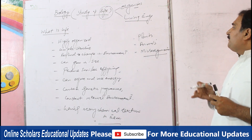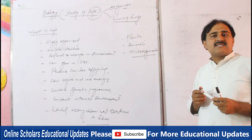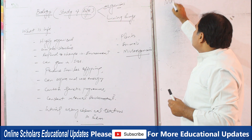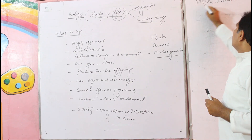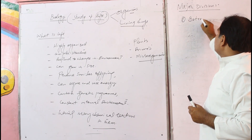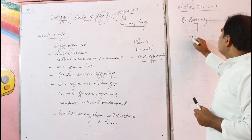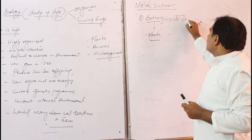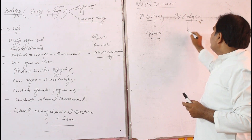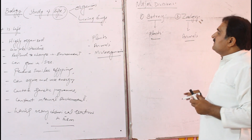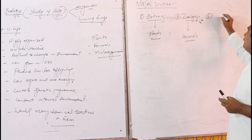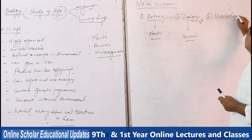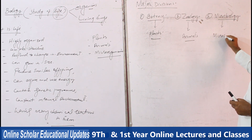These basic living components in our surroundings can be studied in three major divisions of biology. These major divisions are: botany, that is related with the study of plants; second major division is zoology, that is related with the study of animals; and the third major division is microbiology, that is related with the study of micro-organisms.